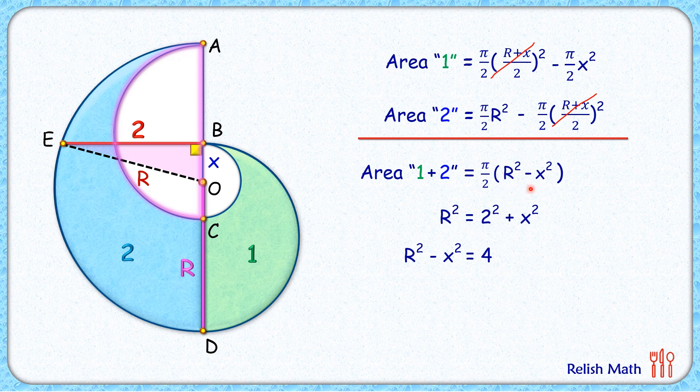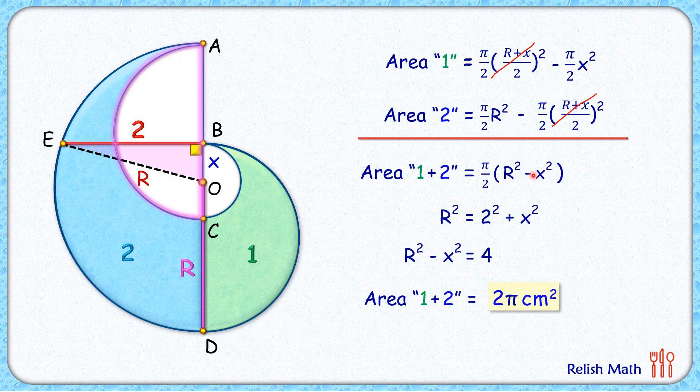Putting this value here, area 1 plus 2, that's the blue shaded region, putting r² - x² as 4. 2 and 4 will get cancelled, so our answer will be 2π cm squared. And that's our answer. I hope you enjoyed the solution. I will see you in next video. Till then tata bye bye.